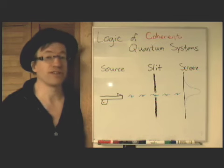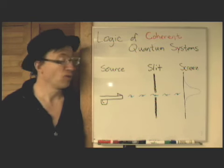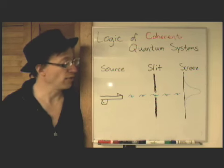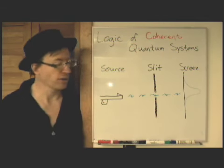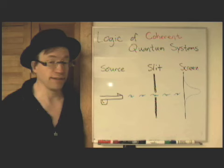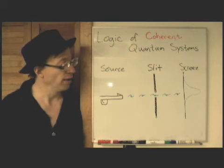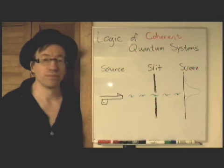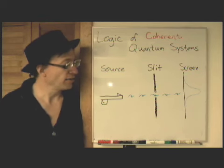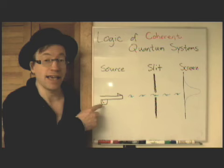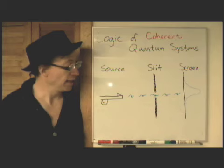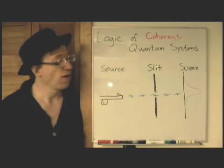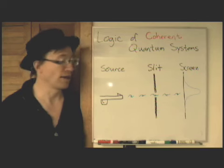We've only got three players in this logical game. We've got the source, we've got the slit, and we've got the screen where the photons get detected. So you just have this source, and it throws out some particles, and it goes at this screen. And to make things simple, I actually only have one. And we get that Gaussian distribution. And I've got to say that Susskind is 100% right if this gun is a classical source.